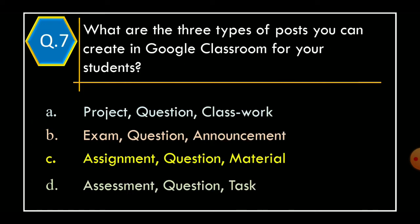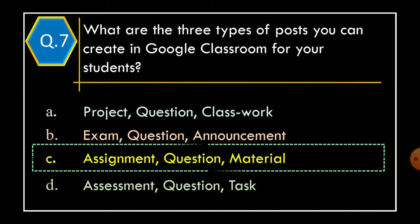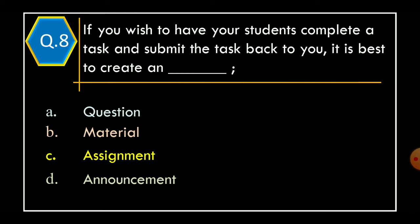Question 7: What are the three types of post you can create in Google Classroom for your students? Option A: Project, Question, Classwork, Option B: Exam, Question, Announcement, Option C: Assignment, Question, Material, Option D: Assessment, Question, Task. And correct option is Option C: Assignment, Question, Material.